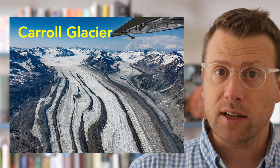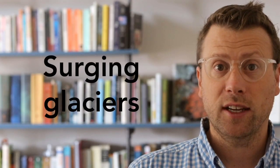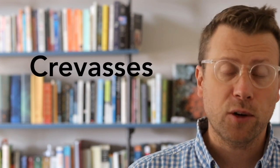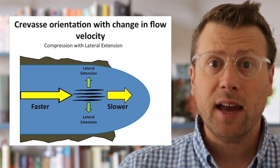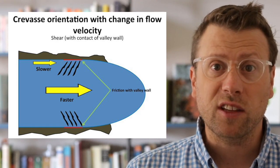Some glaciers, like the Carroll Glacier in Glacier Bay National Park, periodically start rapidly advancing. These are called surging glaciers, or galloping glaciers, and they can move up to hundreds of feet a day. As glaciers flow, large open cracks form on the surface called crevasses. The orientation of crevasses yields insight into the stresses within the glacier. If a glacier speeds up, extensional pull-apart stresses create crevasses perpendicular to the flow direction. If a glacier slows down, ice piles up and spreads laterally, forming crevasses parallel to the flow direction. Crevasses can also form at oblique angles due to shear friction on the sides of the glacier.